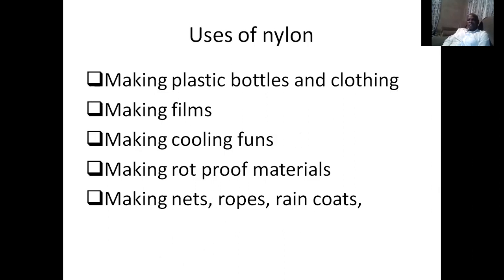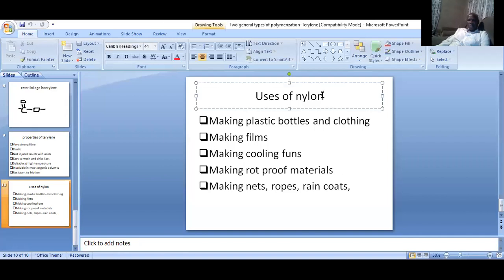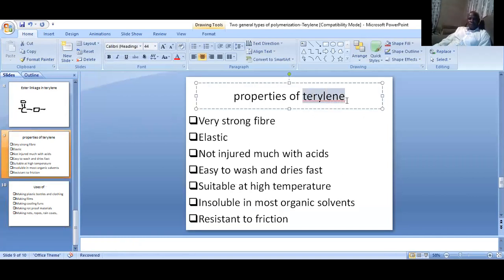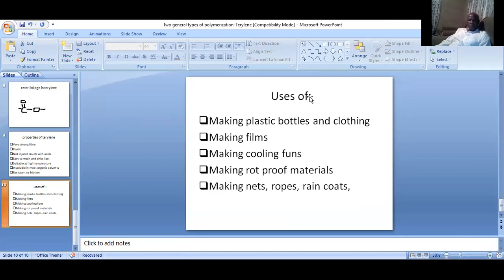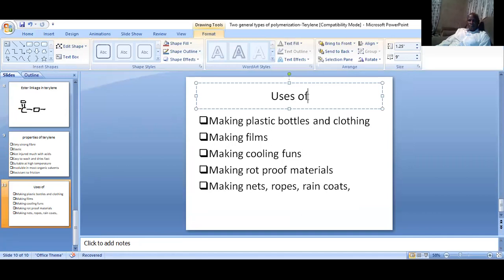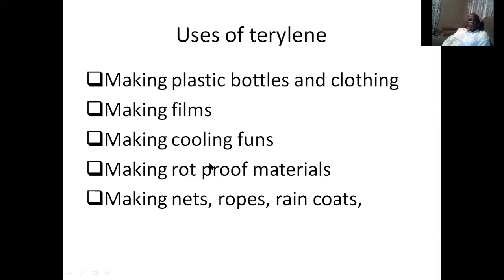Because of those properties, Telerin is widely used. It is used in making plastic bottles and clothing, making fumes and cooling materials, making rot-proof materials, as well as making nets and dobs.